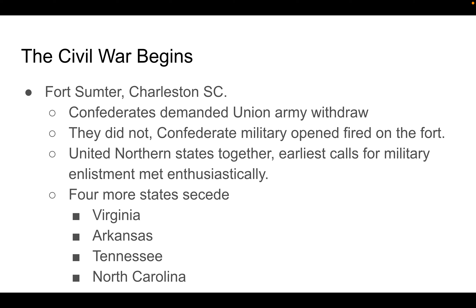The war begins officially with the bombing of Fort Sumter, a fort in Charleston, South Carolina. As the first state to secede, the Confederates wanted the Union Army to withdraw from that fort because it was no longer part of the United States, according to South Carolina. Obviously the Union Army refused to leave because it was still American territory.